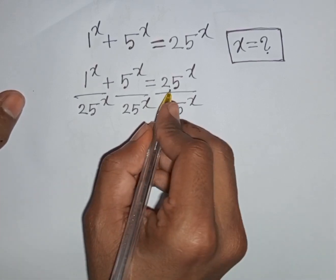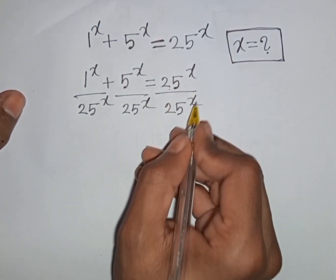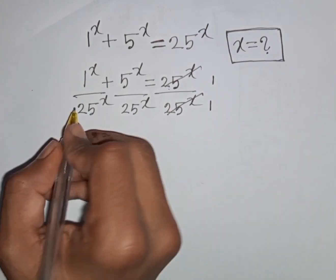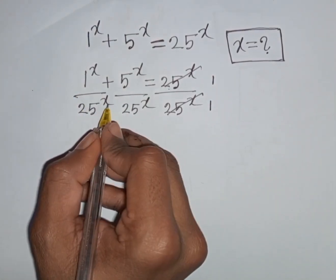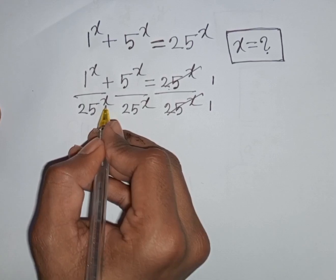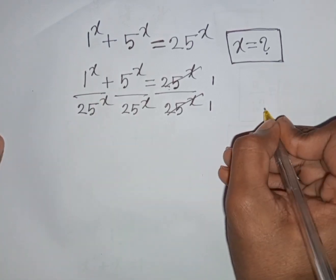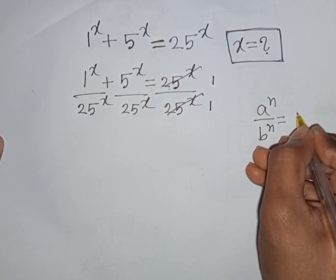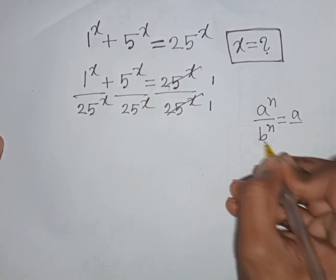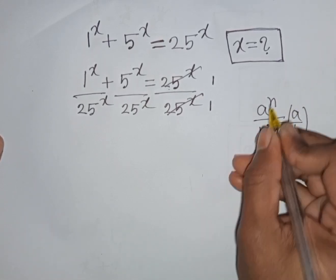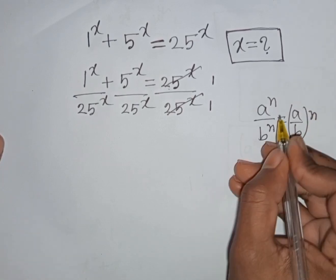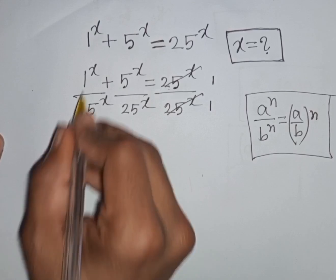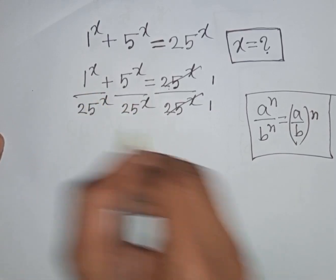This 25 power x will be cancelled. Now 1 power x divided by 25 power x — that means x is the same power but different base. Remember this formula: a power n times b power n is equal to (a times b) power n. Here x is the same power but different base, so according to this formula we can apply it.